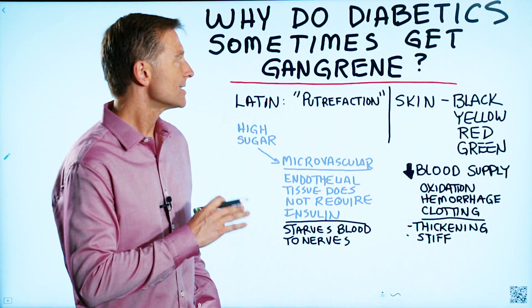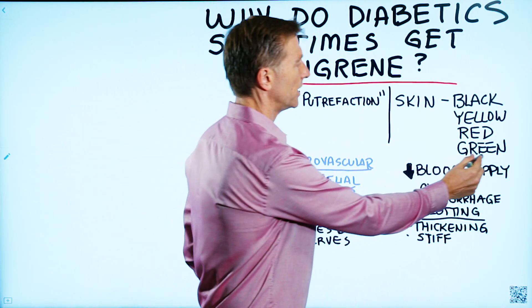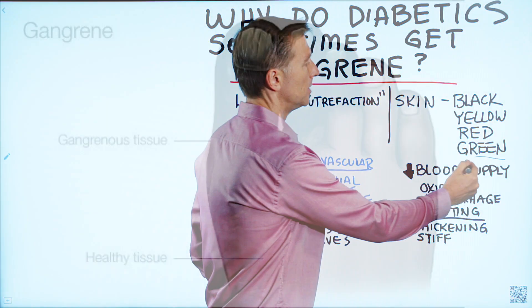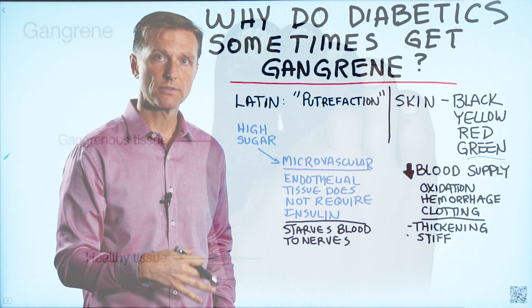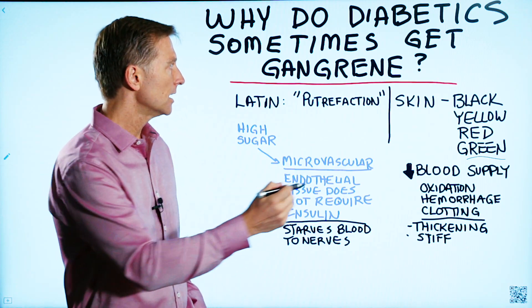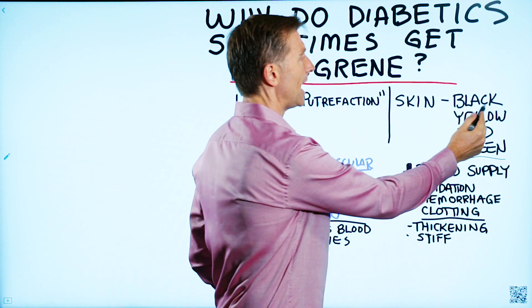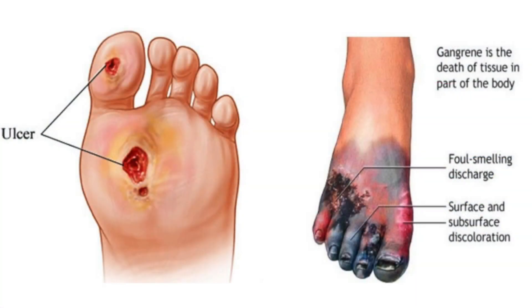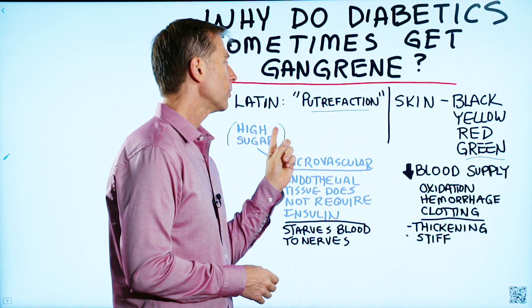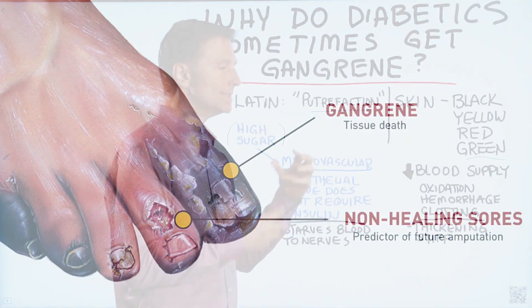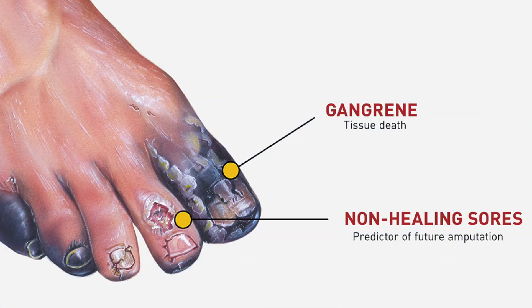It really has nothing to do with the color green, but when you get gangrene, the tissue — usually in the feet or the toes first, and then sometimes in the hands — start turning black, yellow, red, and even kind of a shade of green. The actual word gangrene comes from the Latin word which means putrefaction: dead or dying tissue.